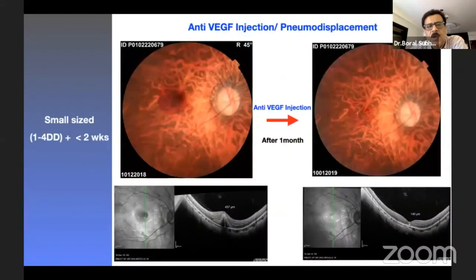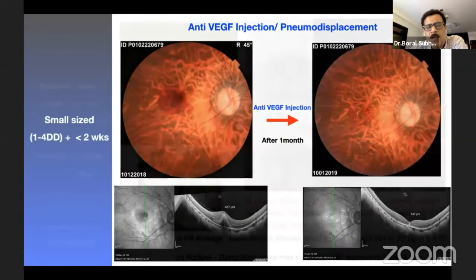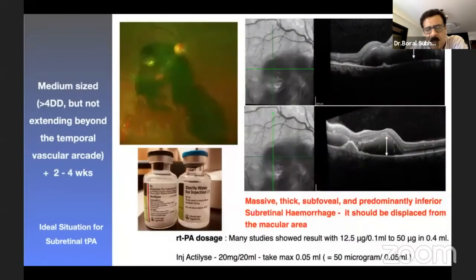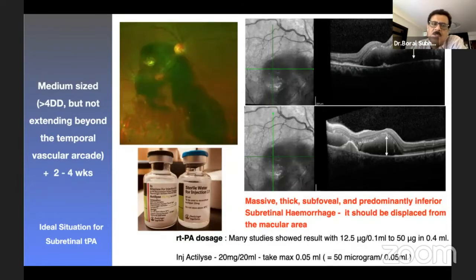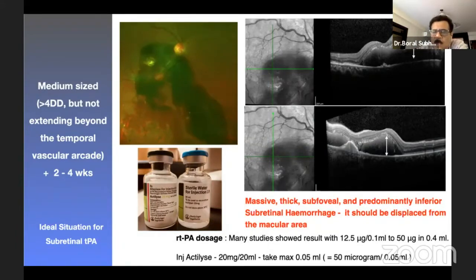For small-sized hemorrhage, as in this case of myopic CNV, you can see the small subretinal hemorrhage - a single anti-VEGF injection is sufficient. In cases of medium-sized blood not extending beyond the temporal vascular arcade, where most of the blood is inferior and the fovea is just covered, vitrectomy with subretinal tPA - tissue plasminogen activator, rtPA at a dose of 50 micrograms in 0.05 ml - is used. This comes from Actilyse, 20 mg in 20 ml; you use just 0.05 ml of it.